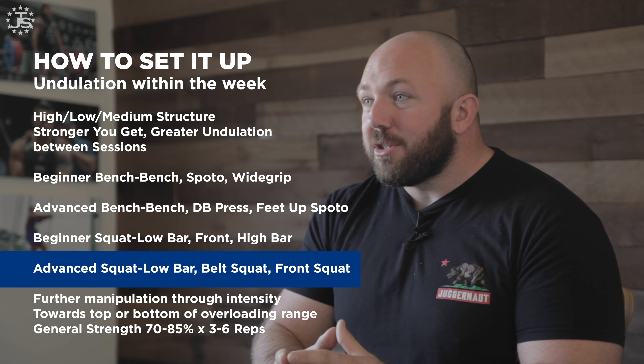We can create further manipulation through intensity. Referring to the principle of overload ranges: if your high day is the most fatiguing movement at the higher end of the general strength range — say 85–90% for sets of three, up to a three-rep max — then on your low day, pick a less fatiguing exercise variation and load it toward the bottom of the general strength range, like 70–75% for sets of five or six reps. If you can't tolerate that much frequency, you can stretch this undulation strategy out over two or three weeks — more on that in the video on undulating periodization strategies.